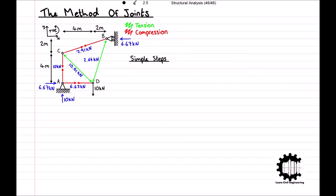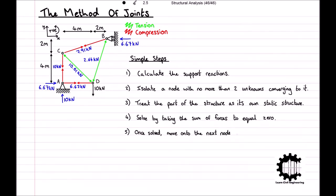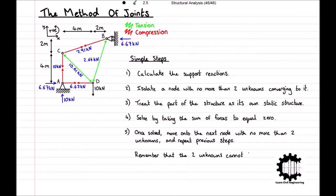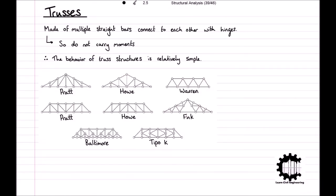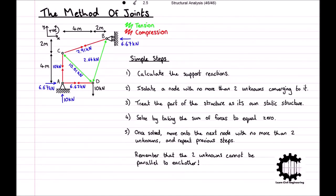To summarize the method of joints: firstly, calculate the reactions at the supports; then isolate a node with no more than two unknowns converging to it; treat that part as its own static structure and solve by taking the sum of forces equal to zero; once the unknowns are found, move on to the next node with no more than two unknowns and repeat. Remember the two unknowns cannot be parallel. In this video we covered the key principles of truss structures, internal forces within truss members, and how to solve a truss using the method of sections and the method of joints. Thank you for watching — please leave a like and subscribe, and post any questions in the comments below.